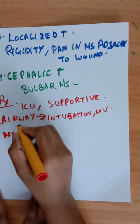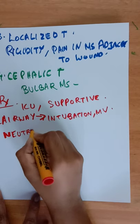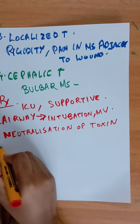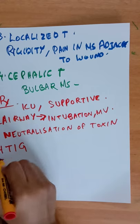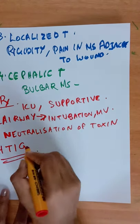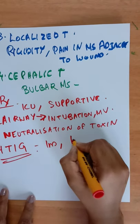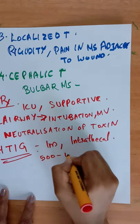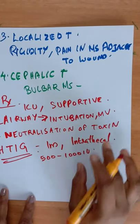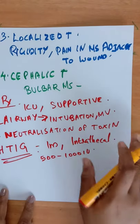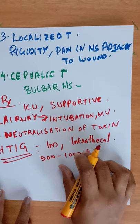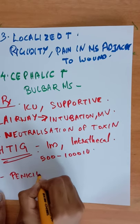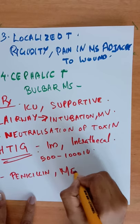Neutralization of free toxin is done by human tetanus immunoglobulin. This is given either as intramuscular or intrathecal. The usual dose is 500 to 1000 international units. The antitoxin cannot dislodge the toxin already fixed to the nerve roots. Also, antibiotics will be necessary, like crystalline penicillin or metronidazole.